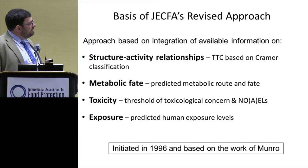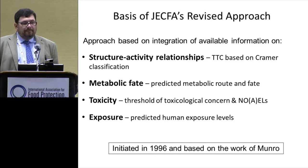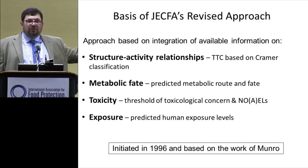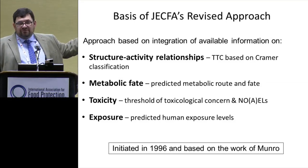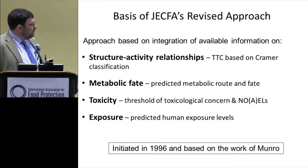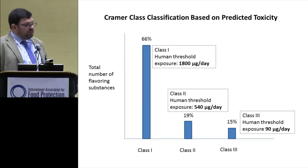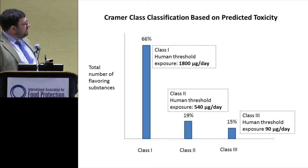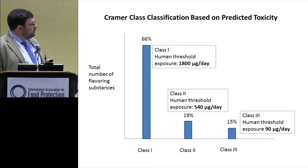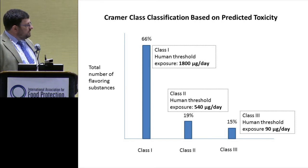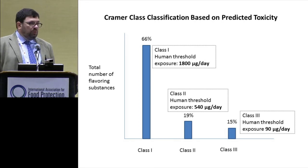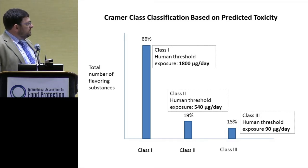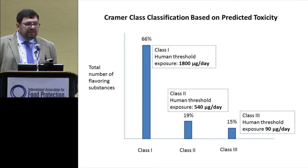The basic JECFA approach is a TTC approach based on Cramer classification, understanding metabolic fate, toxicity, and exposure. If you look at Cramer classifications JECFA has done for flavoring substances, about 66% fall into Class I, about 20% in Class II, and about 15% into Class III — not a huge surprise. For Class III substances, metabolism couldn't be well predicted or there was concern based on structural alerts, but many flavoring substances are very simple materials that easily allocate into Class I.